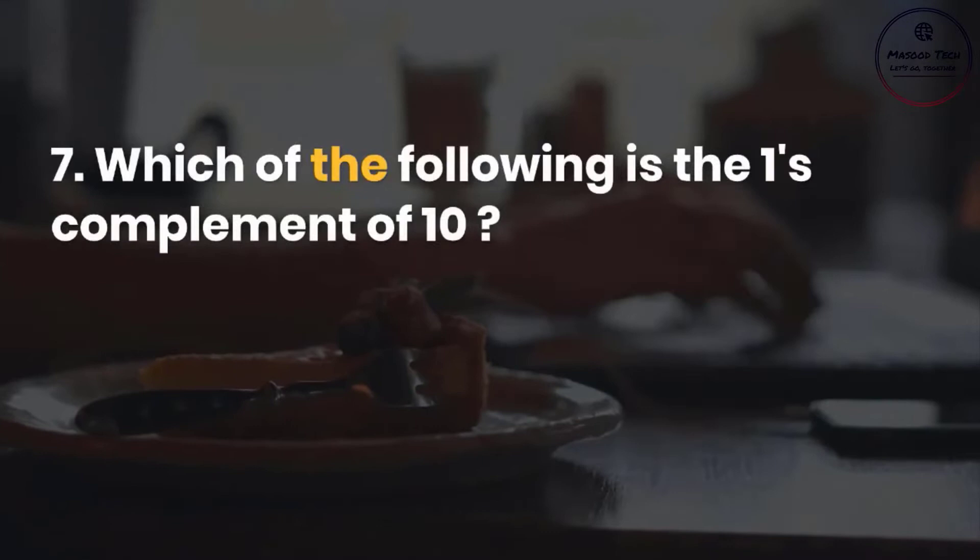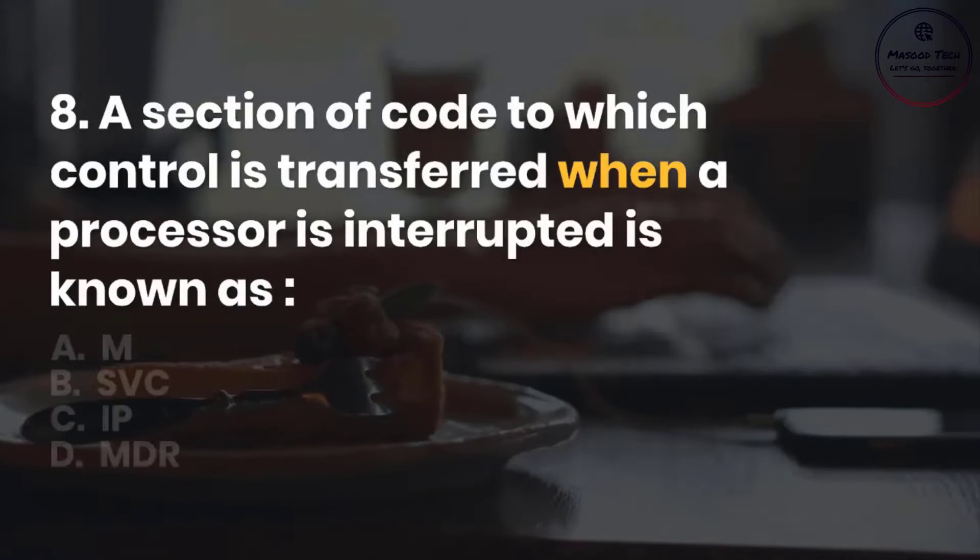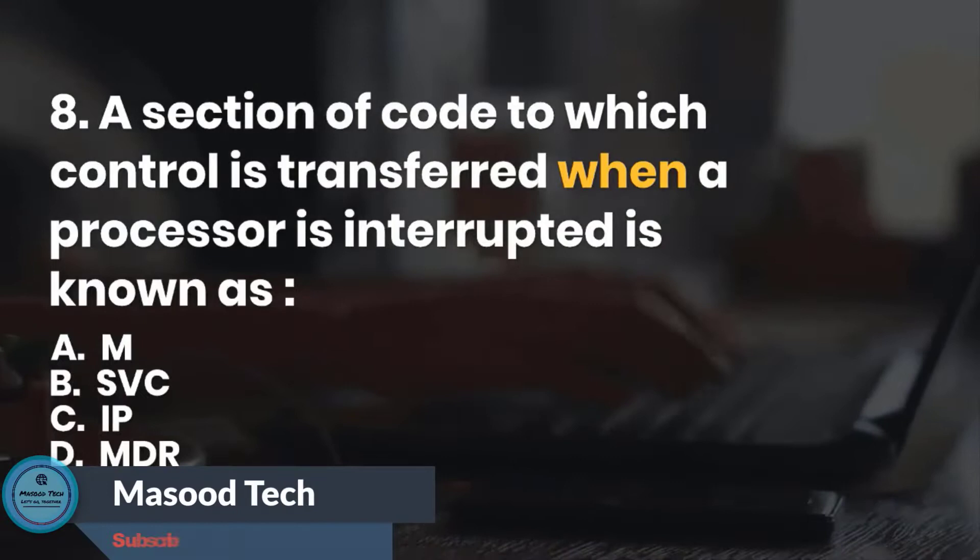Number 8. A section of code to which control is transferred when a processor is interrupted is known as: A. M. B. SE. C. CIP. D. MDR. Correct answer is A.